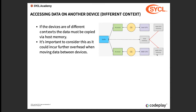Follow-up question: if the two devices are not in the same platform, does data have to go through host memory? You make a good point — it starts being about the difference between what is implemented and what the spec says. The fact that in DPC++ right now you can do a copy from one GPU to another and it will work — yes, that's an implementation detail of DPC++, and it's not portable. That's the sad truth right now.